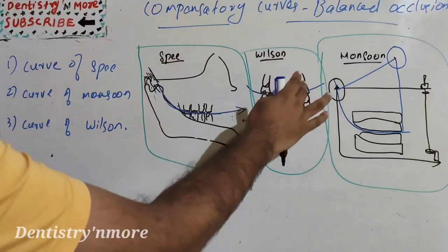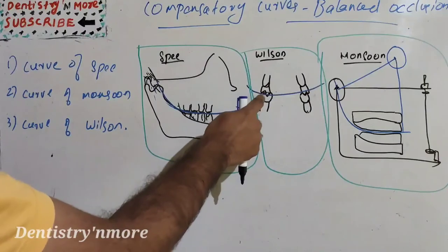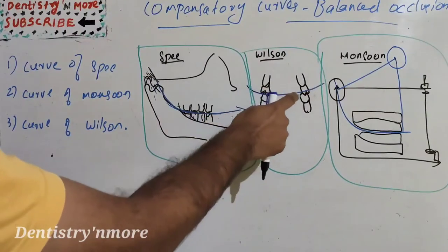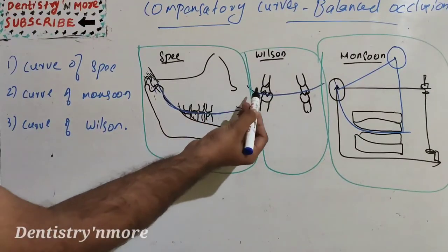You can see the upper teeth are moving away and this is converging while this is diverging. So the buccal cusp is going between the cusp of the maxillary molars to give a heavy occlusal contact with the upper buccal cusp.